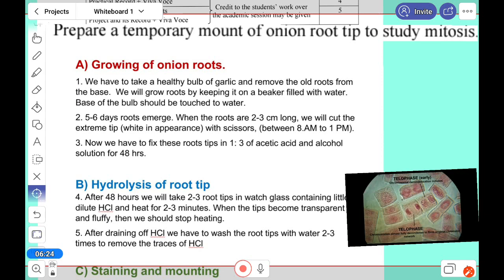First, we have to take one healthy bulb. Here the garlic we have taken, and old roots you have to remove. We will grow the root by keeping it in a beaker filled with water. We'll put toothpicks on the sides and place it in such a way that it touches the water. The bulb will touch. Five to six days, the root emerges.